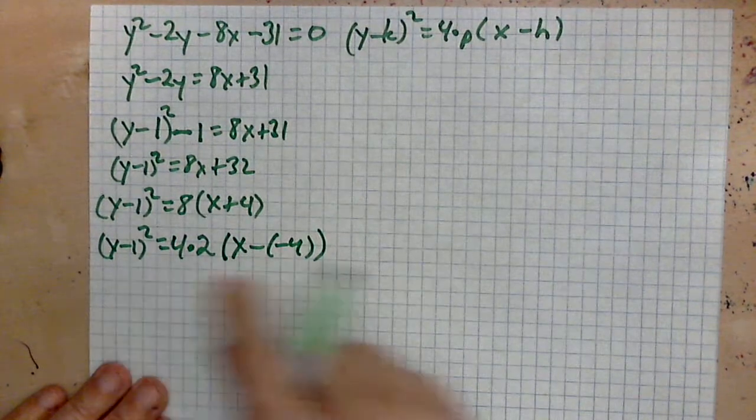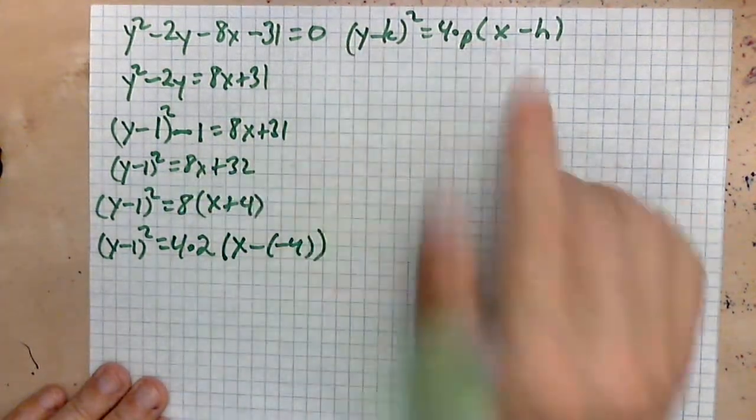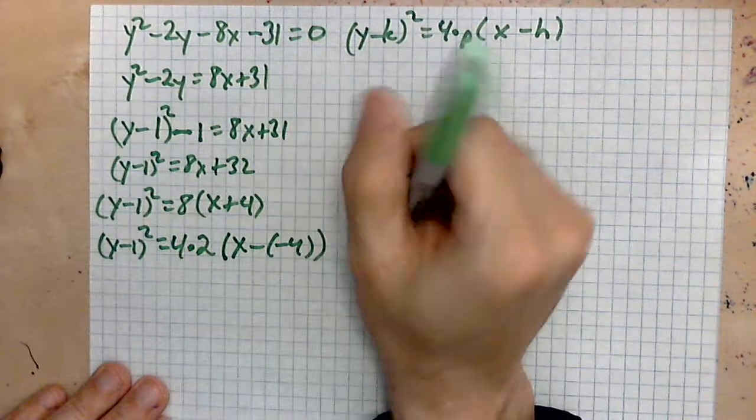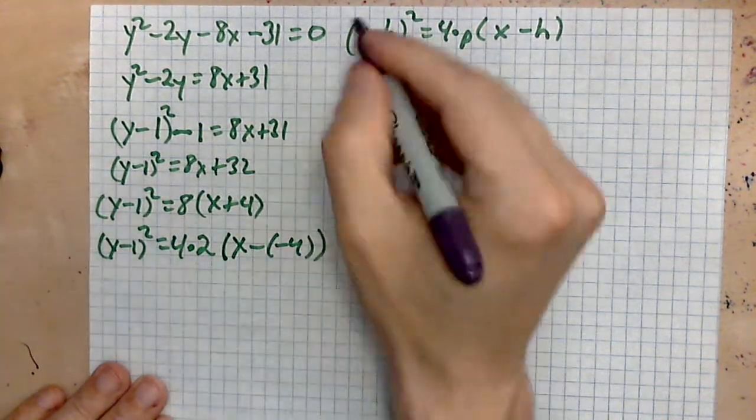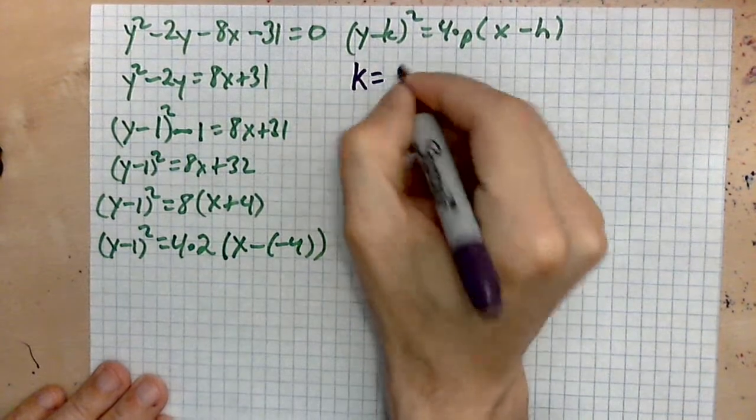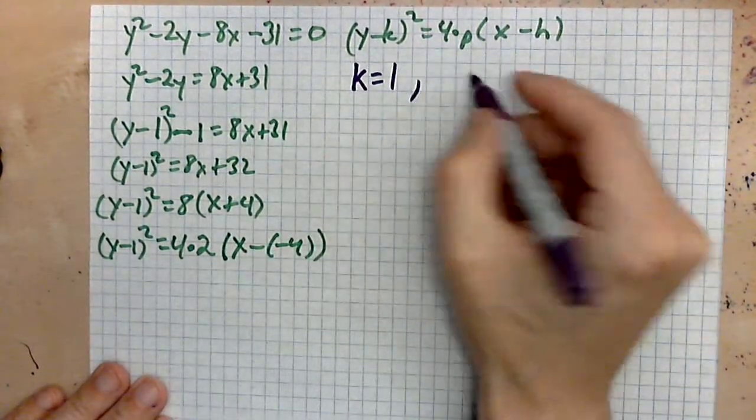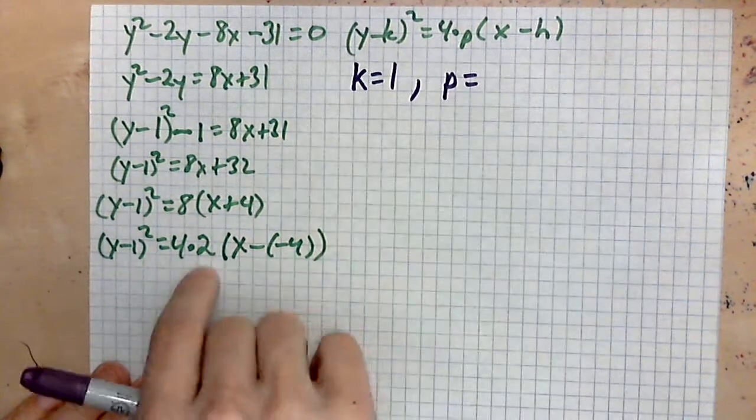Now we can compare what we have here against this general form, which means we can write down k. Let's grab a different color here. So our k is equal to one, the p equals two,